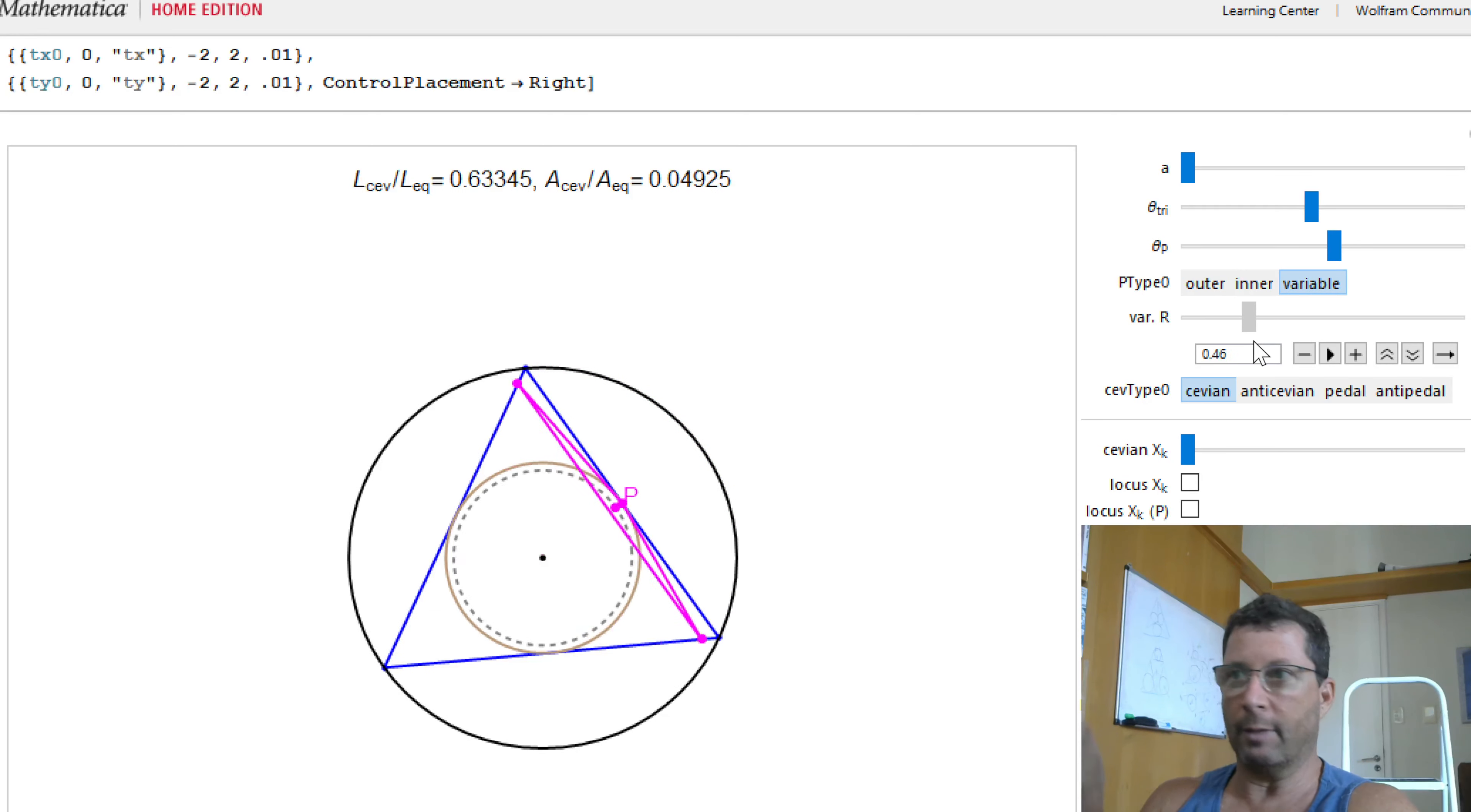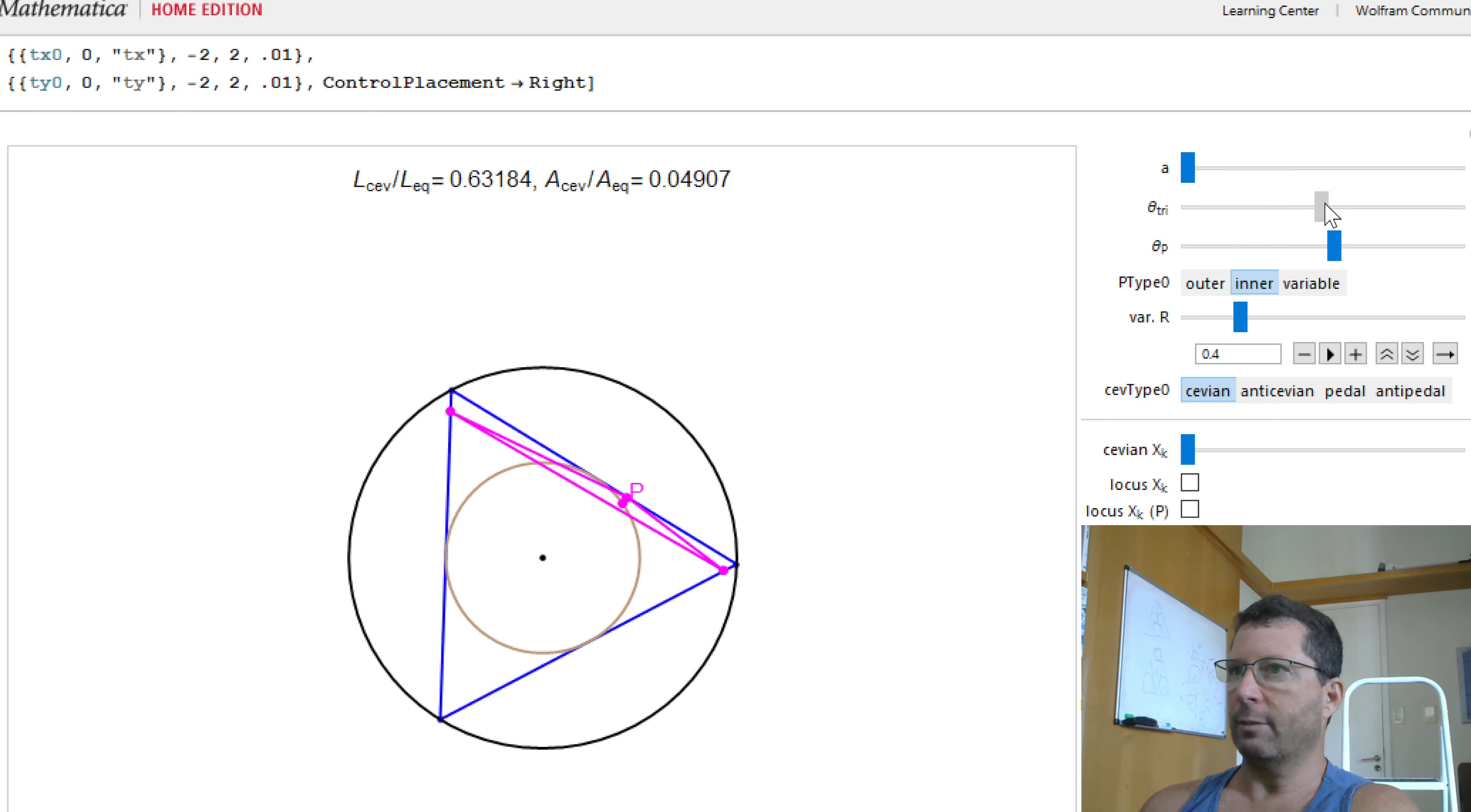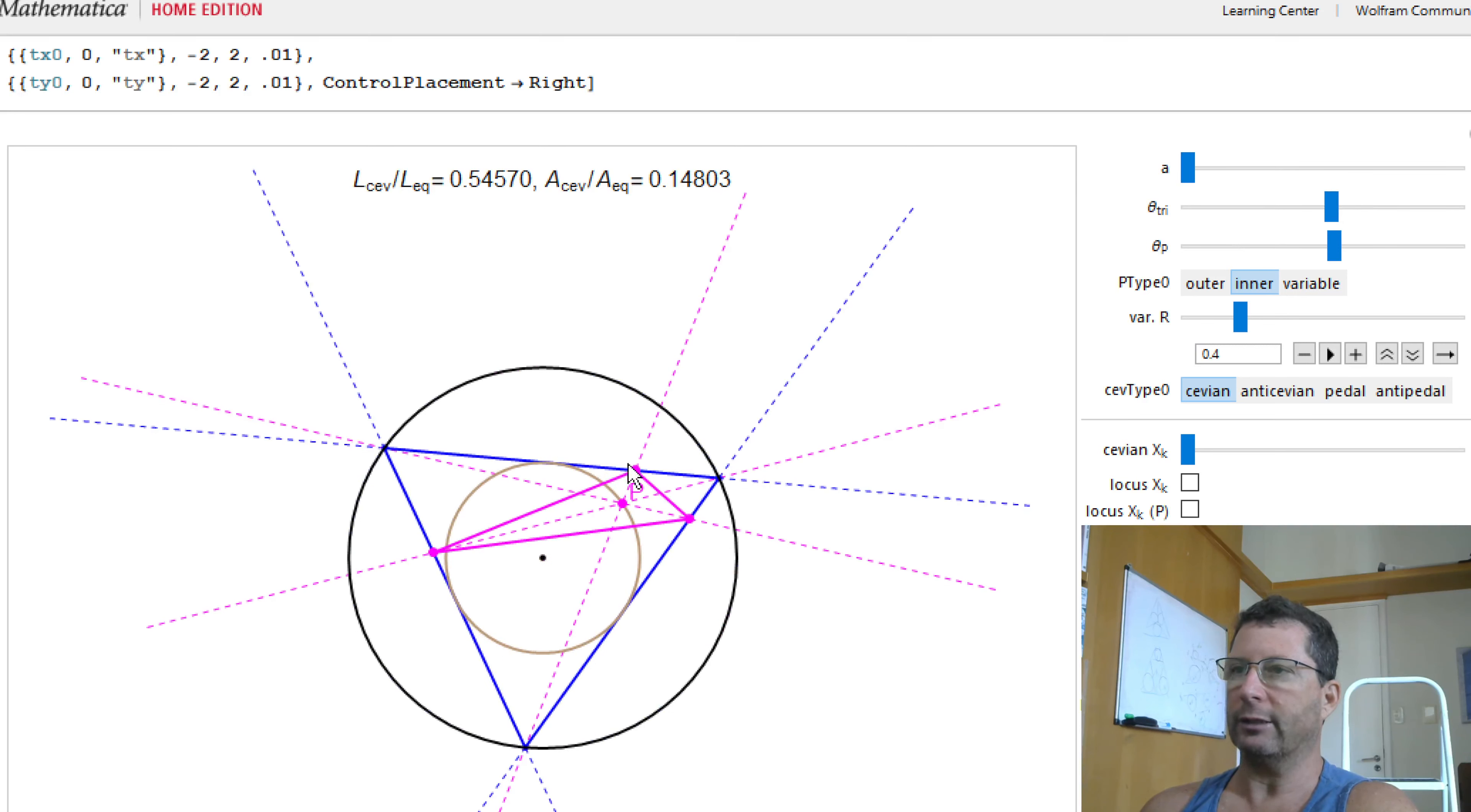We're going to explore this in an upcoming video. But now we actually just want to explore what happens when P is exactly on the inner circle. As I move my triangles around, even the concept of a Cevian is now easier to understand, because the Cevian is going to be correctly inscribed into my reference triangle.